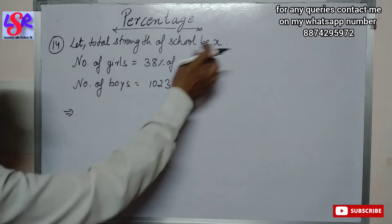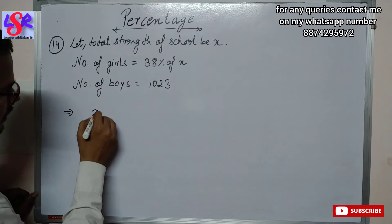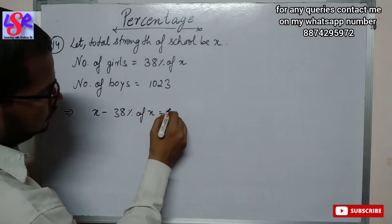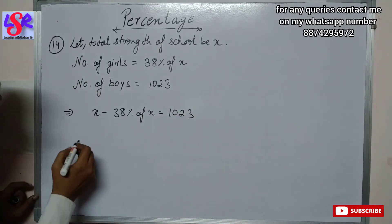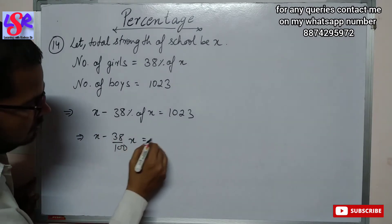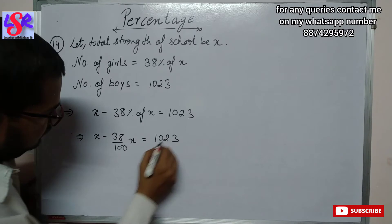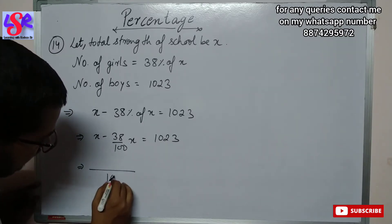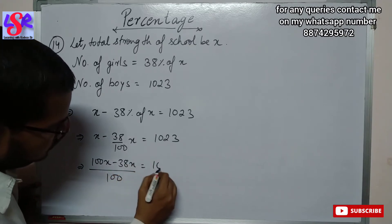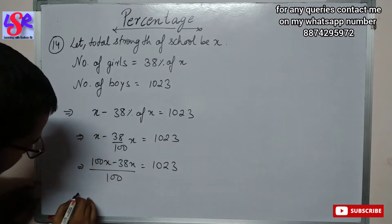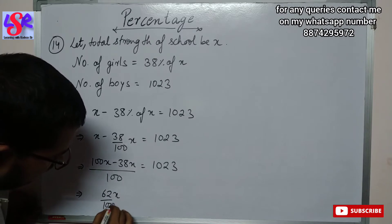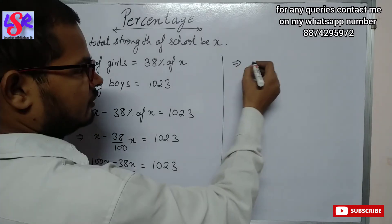Therefore x minus 38% of x equals 1023. This will be x minus 38 upon 100 times x equals 1023. Now we take LCM as 100, so 100x minus 38x equals 1023. Now 100 minus 38 gives 62x upon 100 equals 1023.